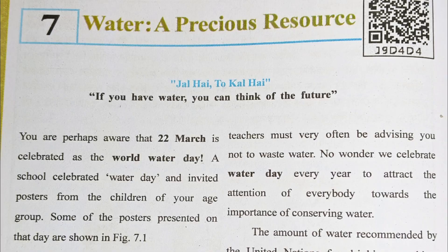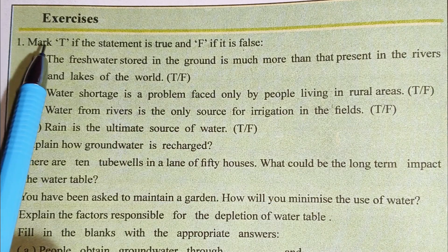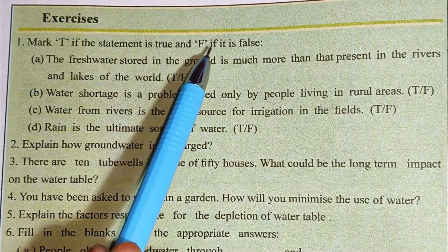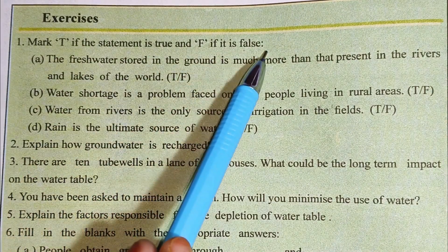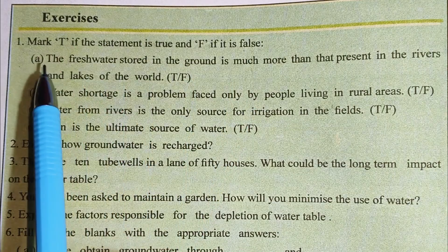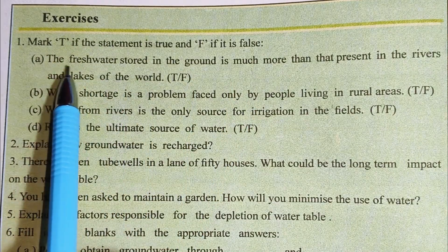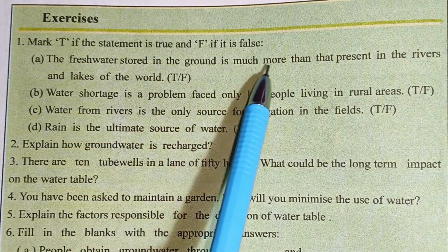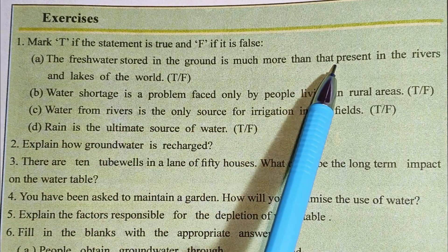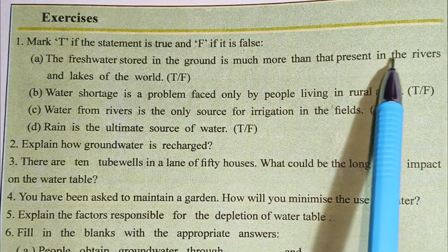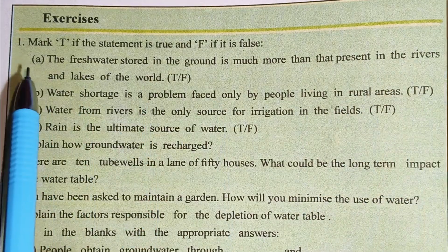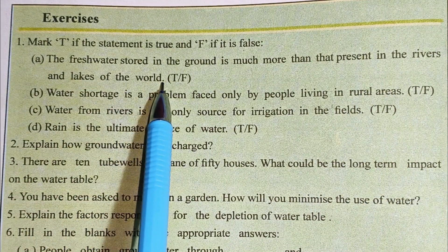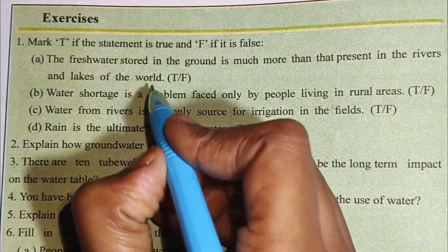We will begin with Question number 1: Mark T if the statement is true and F if it is false. Number A: The fresh water stored in the ground is much more than that present in the rivers and lakes of the world. This is true.